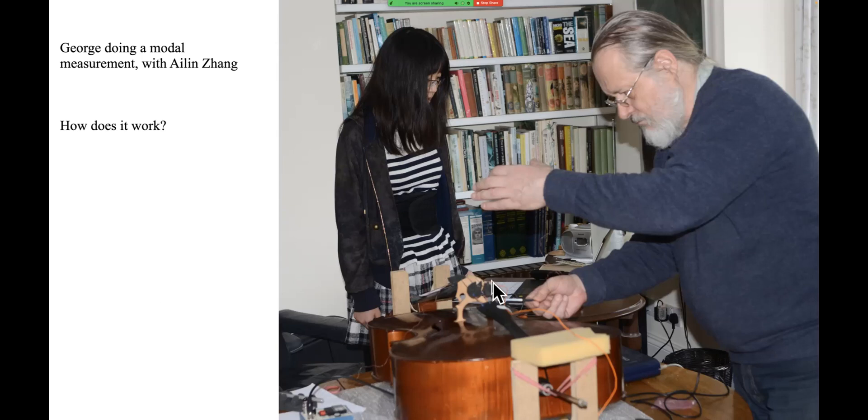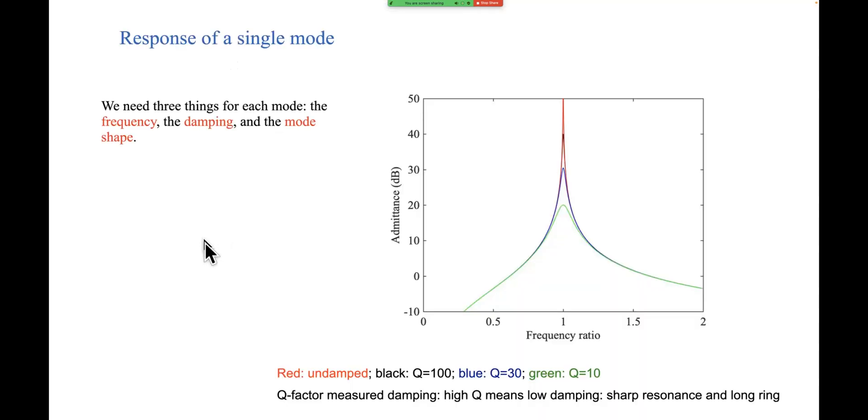Essentially what happens in the computer is that each hammer tap and response is turned into one of these frequency response functions that we've talked about in earlier talks. So the question is, how can you use a lot of frequency response functions to deduce mode behavior? Here's a picture we've seen before—this is the frequency response of a single mode, and I can use this to talk through in broad terms how George's computer software is working. What is it we want to know for each mode?